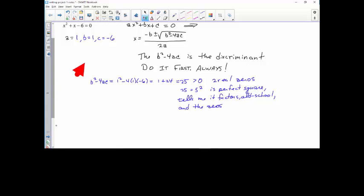And the zeros, the solutions to the equation, will be rational. No square roots of 7 or square root of 3 in there. No radicals in the final answer, it's all going to be rational. So there's my b² - 4ac.